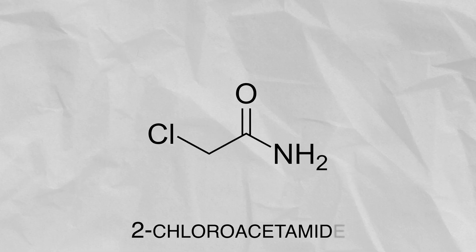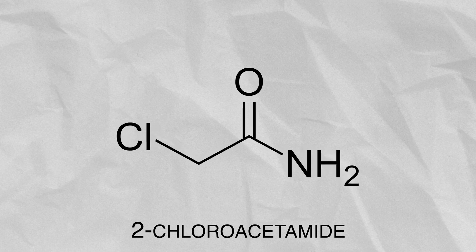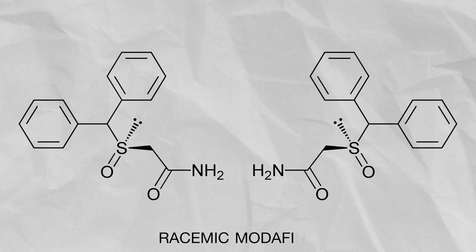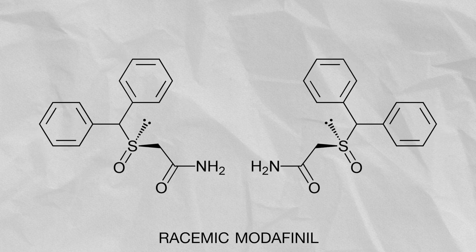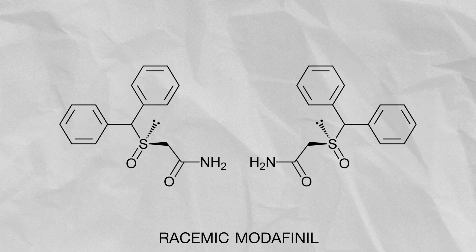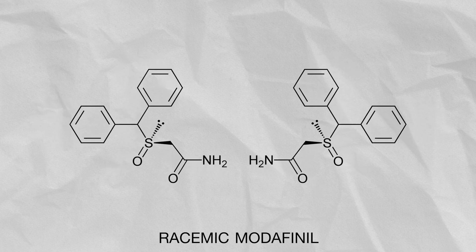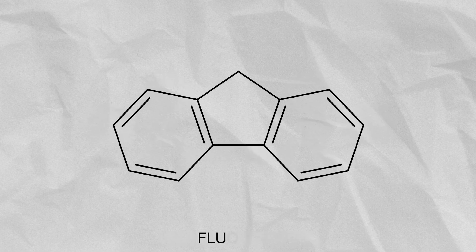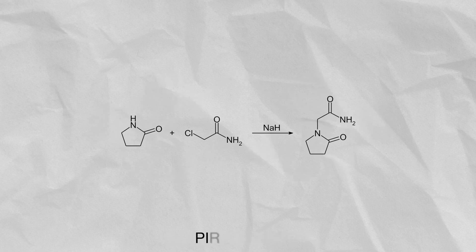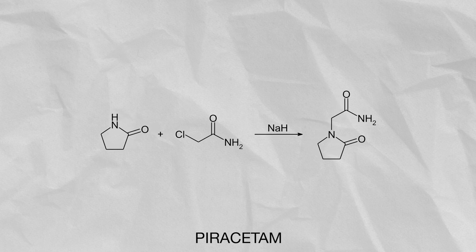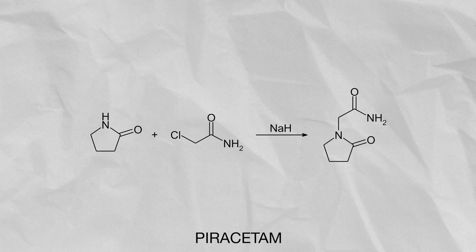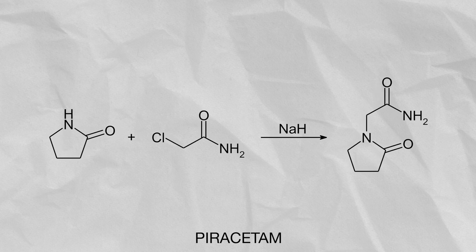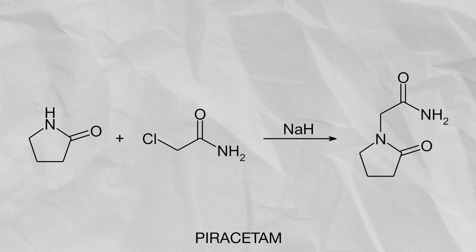Today we are going to make chloroacetamide, which is a precursor to the famous nootropic drug modafinil. I would like to make some modafinil myself, but I don't know if this would be legal in Germany. Therefore I am simply going to swap out the diphenylmethane group for a fluorine group. It is also used to make a pharmaceutical used to treat dementia and as a cognitive enhancer, known as piracetam. I might actually make some of that stuff after doing my legal research.